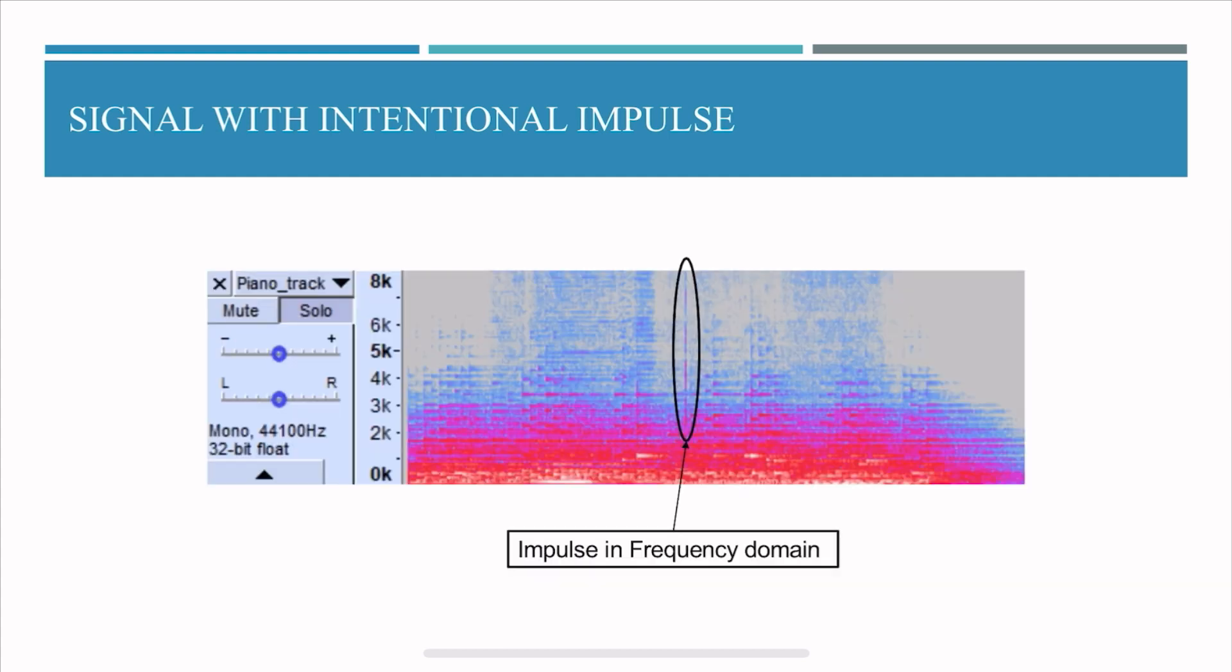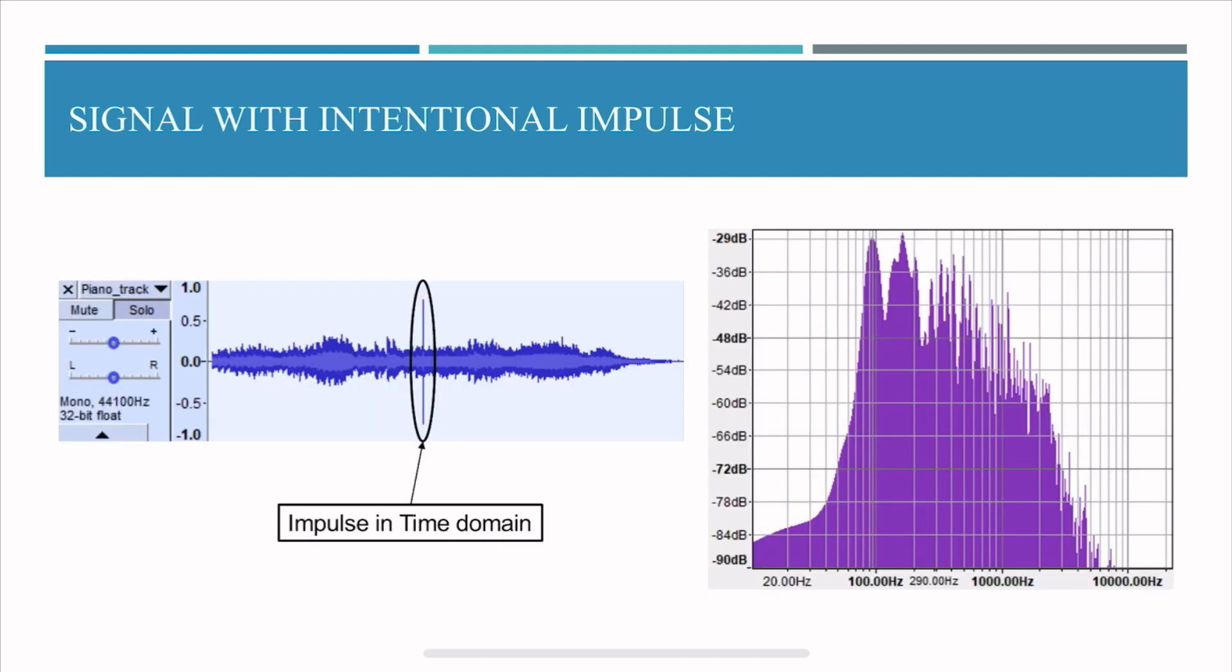You can also listen to the track, but then there's a more easier way for everybody is to look at the spectrogram. Now if you look at the spectrogram you will have the time axis on the top and you can see that there's one single line that's really short in time but it's really broad in the frequency. I mean it goes from the bottom all the way to the top of the graph, so that is an impulse.